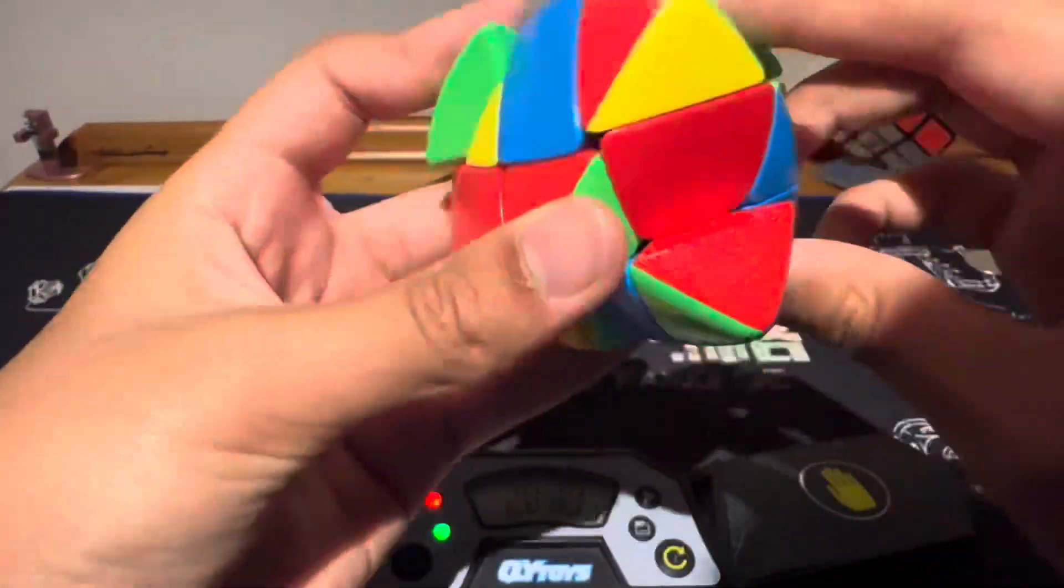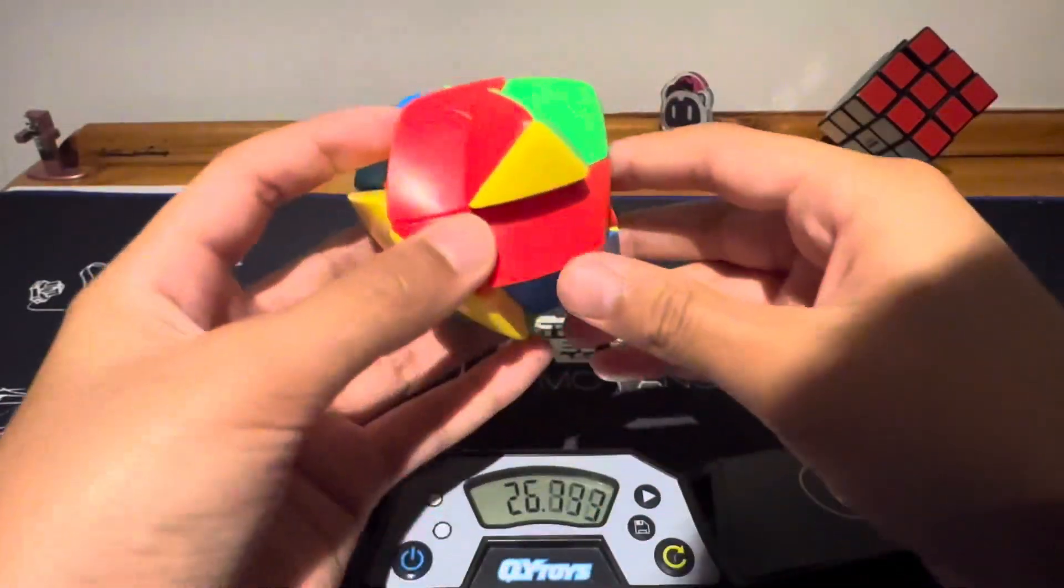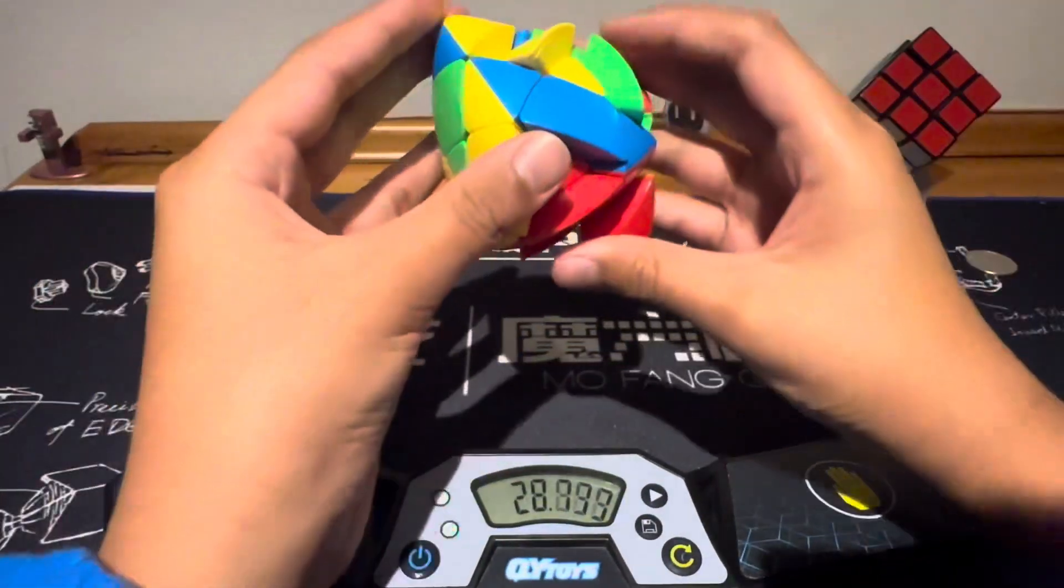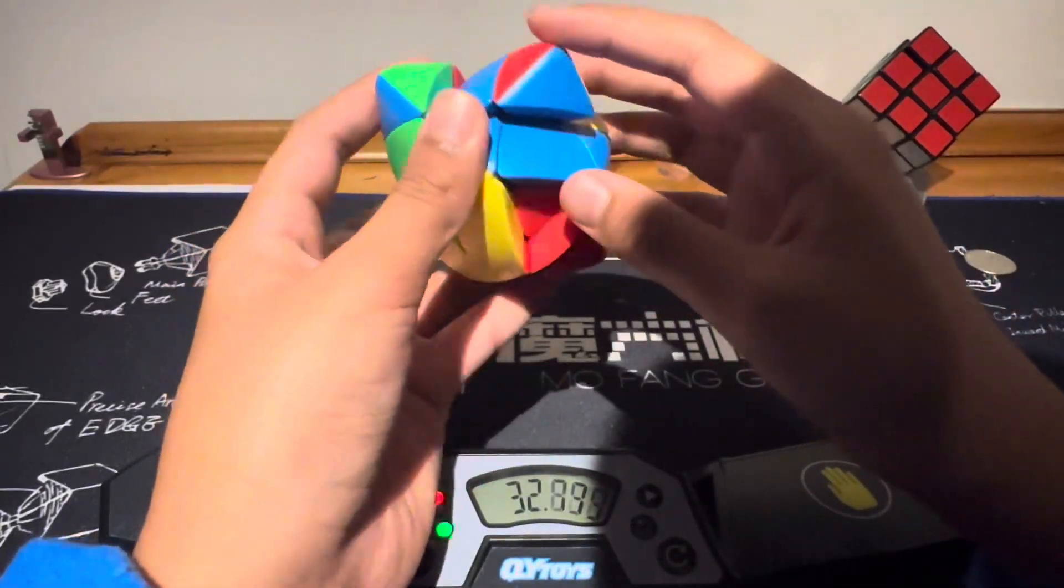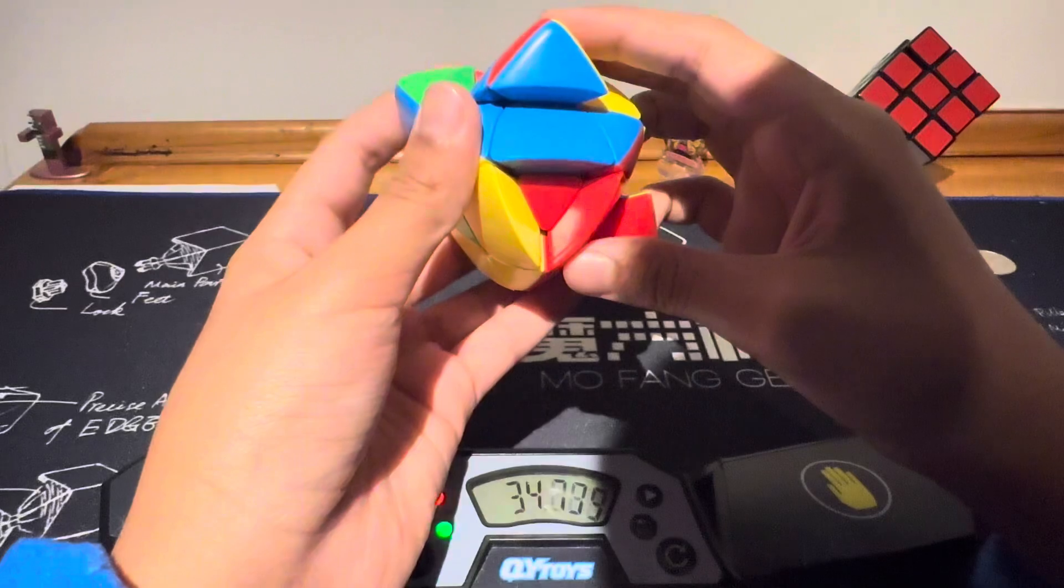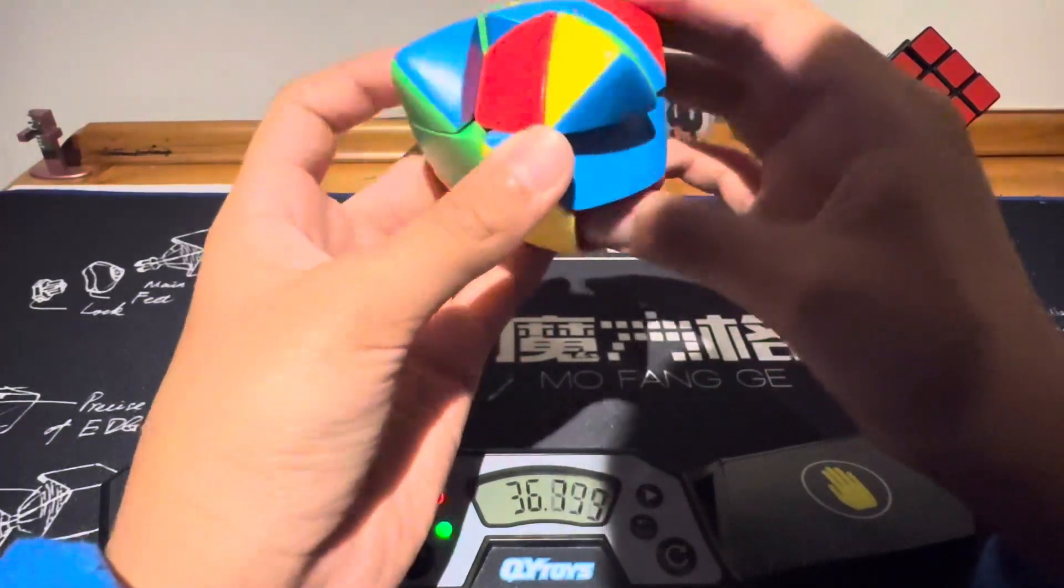Boom, halfway done with the cross. Okay, yeah, cross done in 26 seconds. Now F2L. This kind of matches up with this, let's go there. Right.